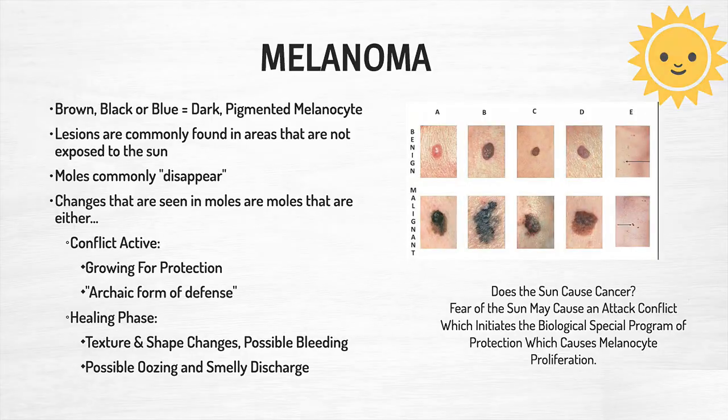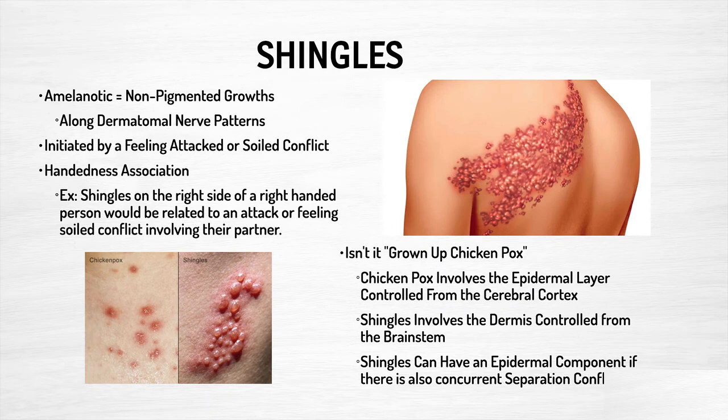Let's talk about shingles. This is a really interesting topic because it's another misconception. We kind of think of it as grown-up chicken pox — the herpes zoster virus. But it presents completely differently. Chicken pox are typically all over the body, whereas shingles follow an interesting dermatomal pattern and are typically only on one side of the body, yet we're told it's the same disease.